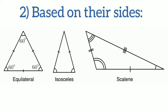Next is isosceles. In isosceles, two sides are equal. If two sides are equal, then the two angles opposite those sides are also equal.